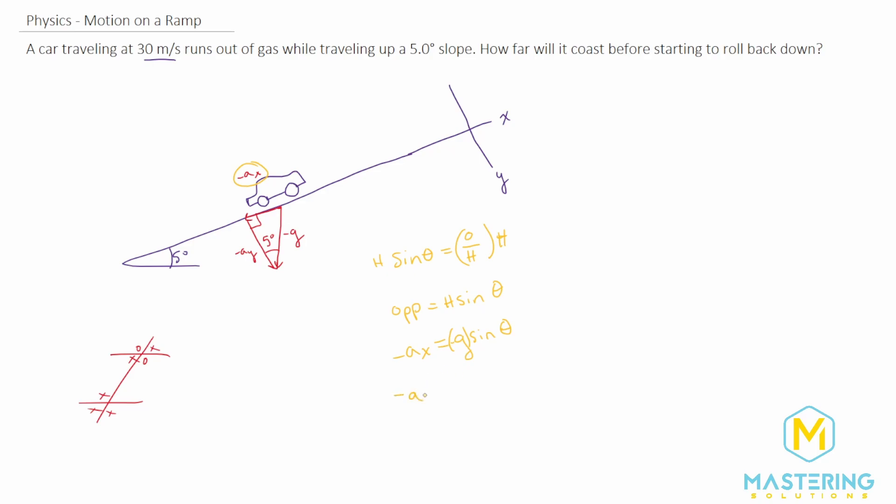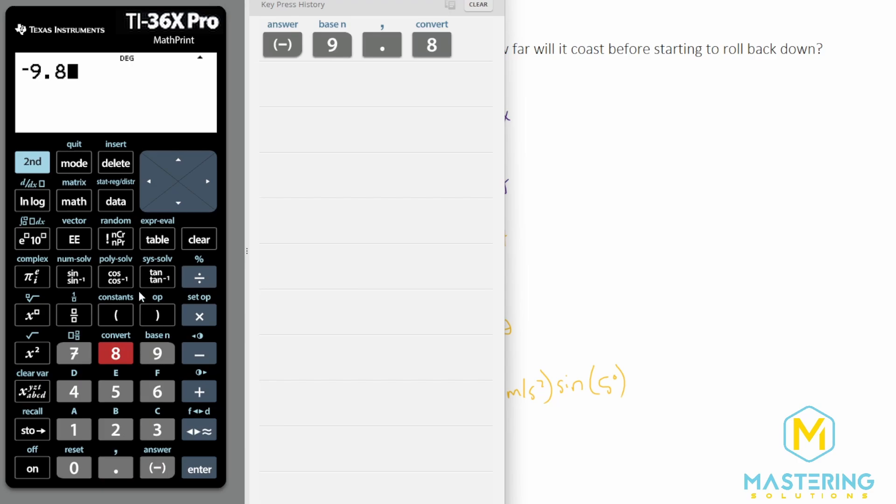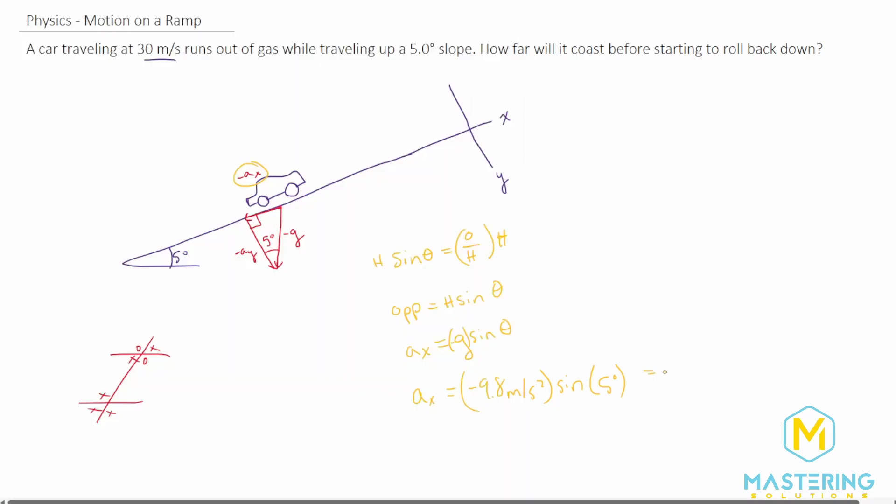So negative a sub x. I put negative here just to say that it needs to be negative, but I just want it to say acceleration. And then we have negative 9.8 meters per second squared times the sine of the angle 5 degrees. So negative 9.8 times the sine of 5 gives us negative 0.854. We have negative 0.854, and that is going to be meters per second squared.